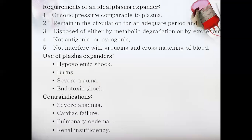The requirements of an ideal plasma volume expander include: oncotic pressure comparable to plasma, remaining in circulation for an adequate period so repeated administration is not needed, disposal by either metabolic degradation or excretion, no antigenic or pyrogenic reactions, and no interference with blood group cross-matching.